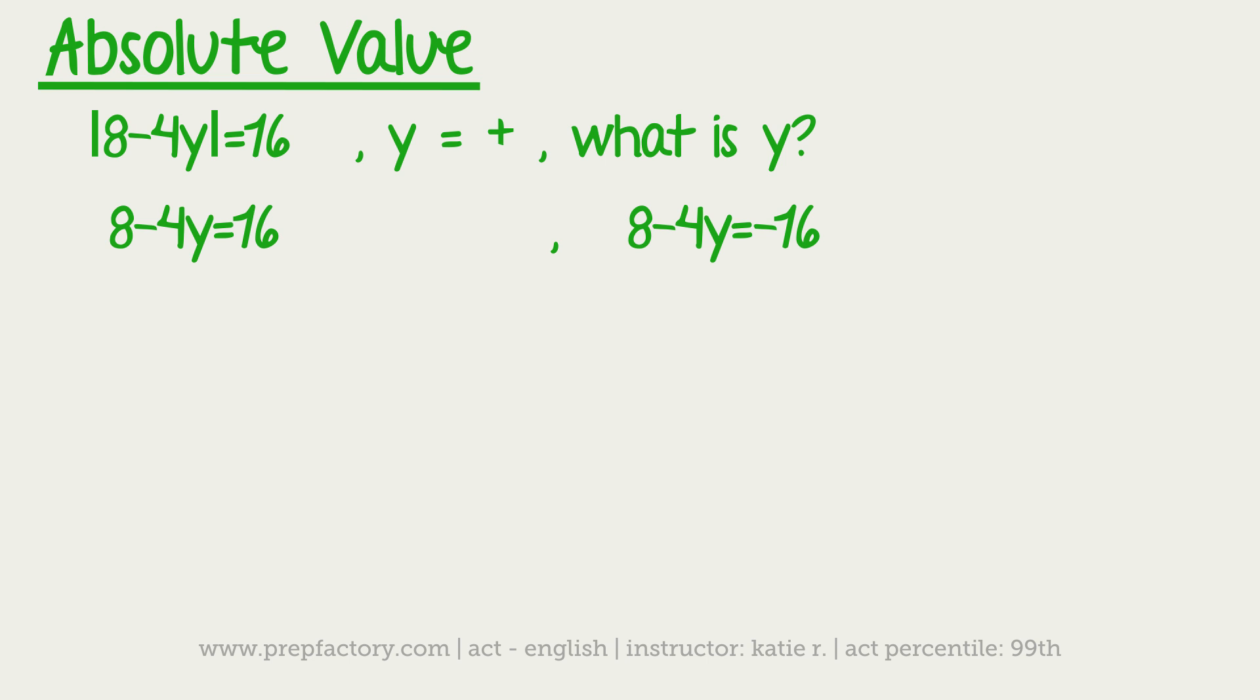So if you solve both of these, you'll figure out what the answer is. So in the first one, just a normal equation, you take away 8 from both sides. So you've got negative 4y is equal to 8. And then you would divide by negative 4. So then you'd have y is equal to negative 2. Okay, so y is negative 2, we don't want that.